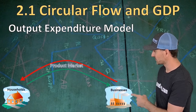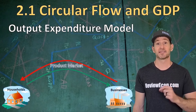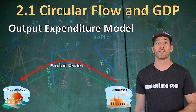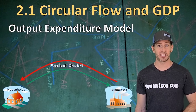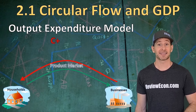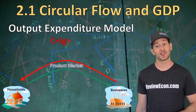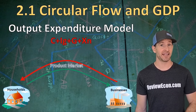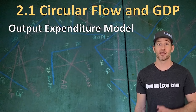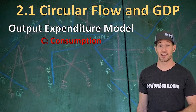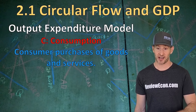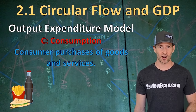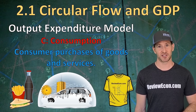In the output expenditure model, we look at the sales in the product market — the money that goes from households to businesses. The formula is C plus I sub G plus G plus X sub N. The first variable is C for consumption: that's consumer purchases of goods and services. It could be the purchase of your lunch, the service of getting your car washed, or buying that t-shirt we just looked at.